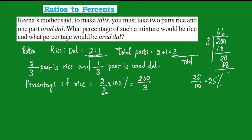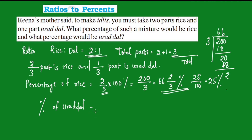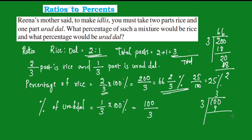The remainder is 2, the divisor is 3, so the quotient is 66 and 2 by 3 percent. Now for the urad dal part: the fraction is 1 by 3. Multiply by 100: 100 divided by 3 gives 33 remainder 1, so the answer is 33 and 1 by 3 percent.